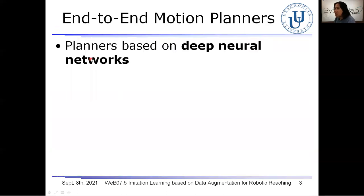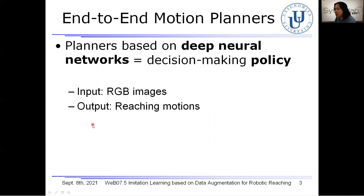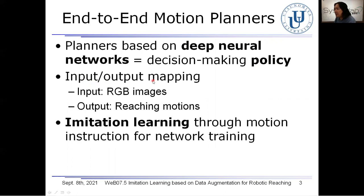In recent years, motion planners based on deep neural networks have been proposed for robotic hand reaching tasks. The deep neural networks play the role of a decision-making policy in the motion planner. For the motion planner, RGB images are fed as the inputs. Then, reaching motions for the inputs are planned as the outputs by the policy. For this input and output mapping, imitation learning through motion instruction is applied beforehand.